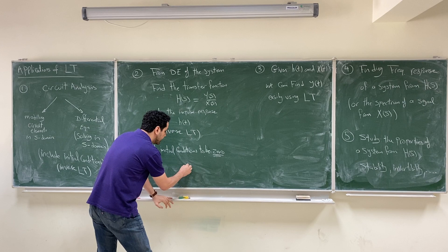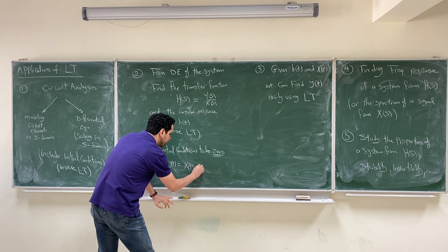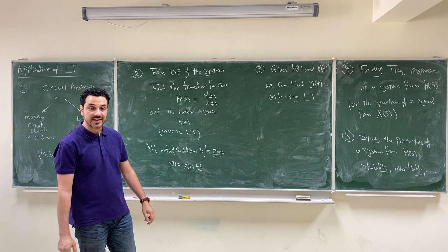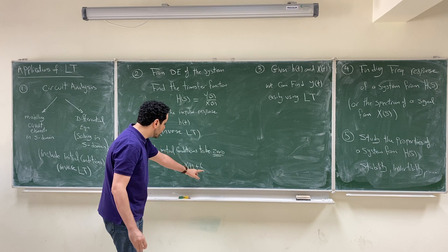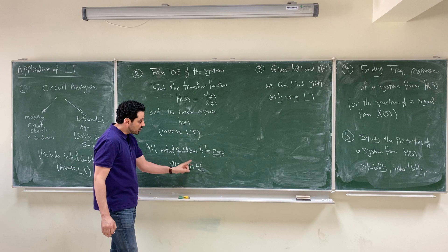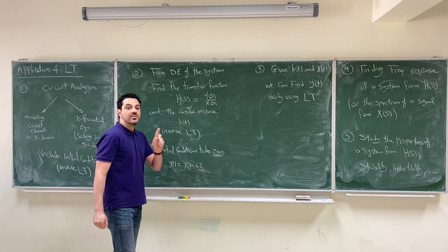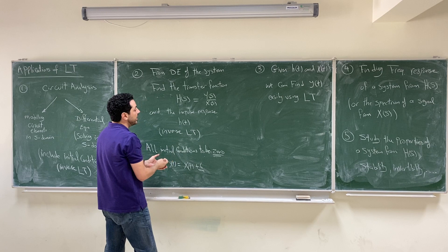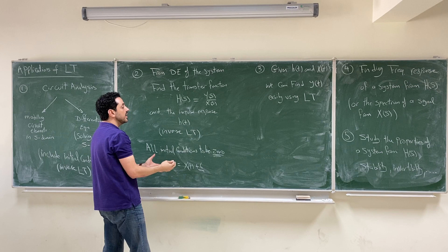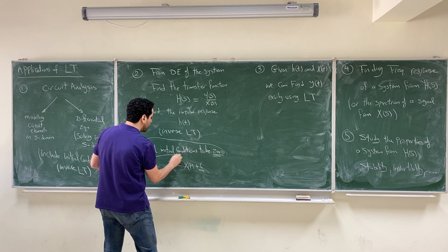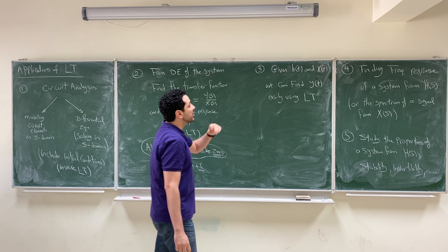For example, if Y(t) = X(t) + 6, the system is not linear because of the constant six, which represents non-zero initial conditions. So if we are dealing with linear systems and using convolution equations — which are valid only for linear systems — we must assume all initial conditions to be zero by default.